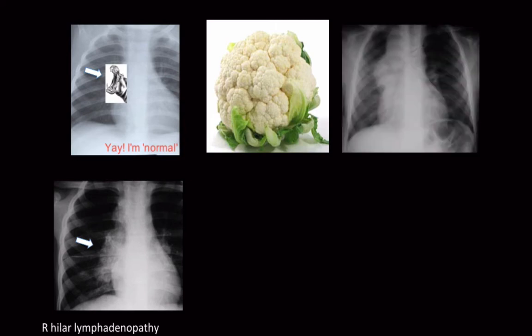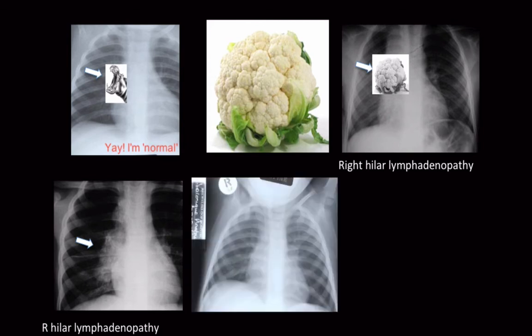Here's another example — a nice round convex structure. That's right hilar lymphadenopathy, and there's your cauliflower in the right hilum. You can also get lymphadenopathy on the left, and if it's big enough it'll extend beyond the cardiac shadow. So there's a cauliflower sticking beyond the margins of the cardiac shadow on the left.